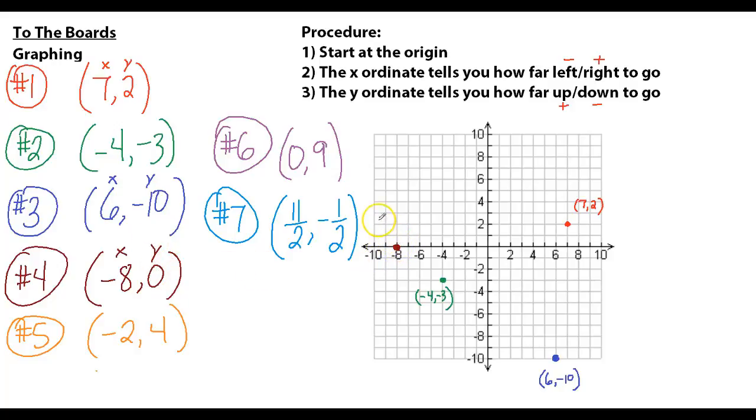Now, negative 2, 4. My x is negative 2, my y is 4, so I'm going to go left 2, up 4. That's negative 2, 4. Let's try this: 0, 9. I go left nothing and up 9, so 0, 9 would be this spot right here.